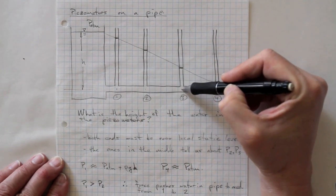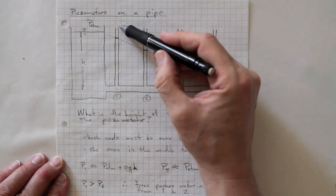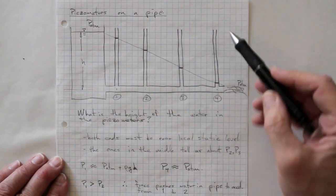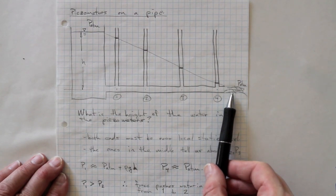A lower height, a lower pressure, and a lower height, another lower pressure. These are called piezometers and they allow us to directly visualize the pressure gradient as we go down the pipe.